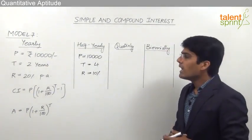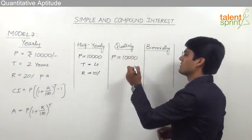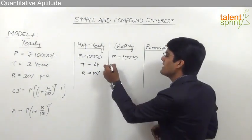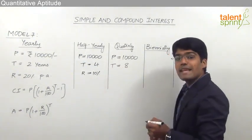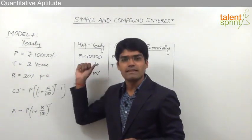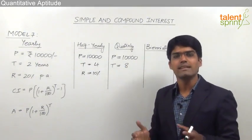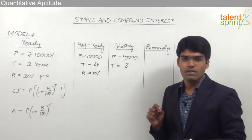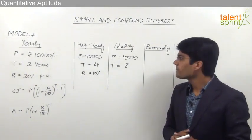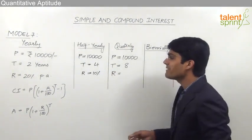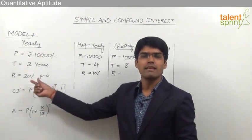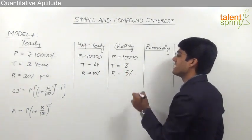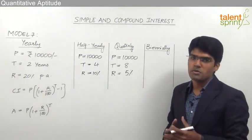For quarterly calculations, the principal remains Rs. 10,000. The time period will be 8 periods because 1 year has 4 quarters, so 2 years have 8 quarters — each period being 3 months. The given rate is 20% per annum, so for only a quarter of a year the interest generated is just 5% per period, where a period equals 1 quarter or 3 months. By substituting these 3 values in the formula we get the required answer.